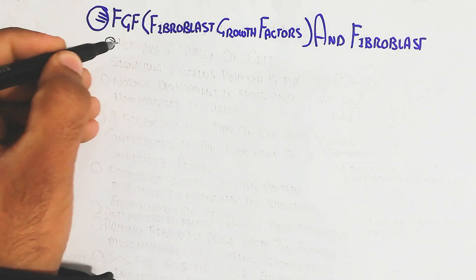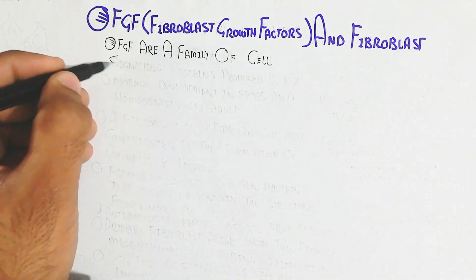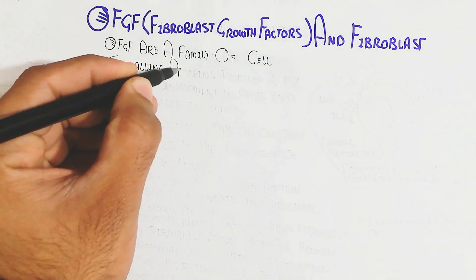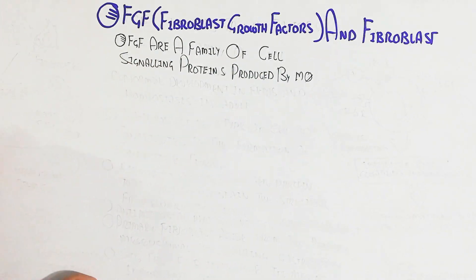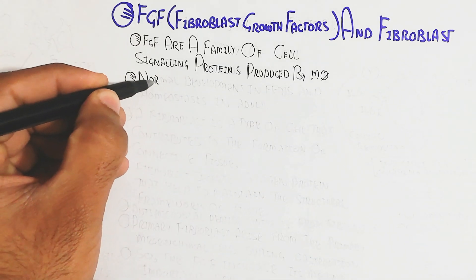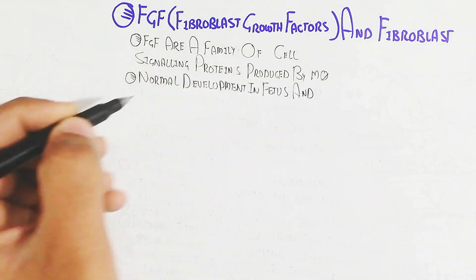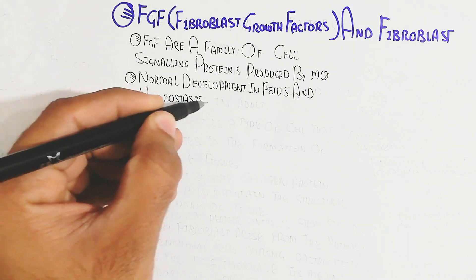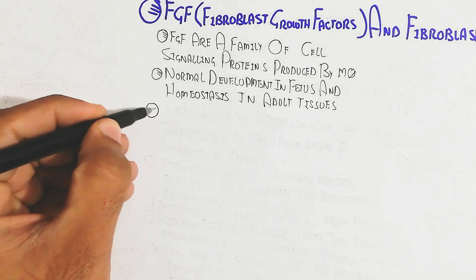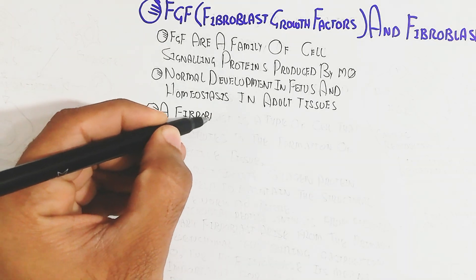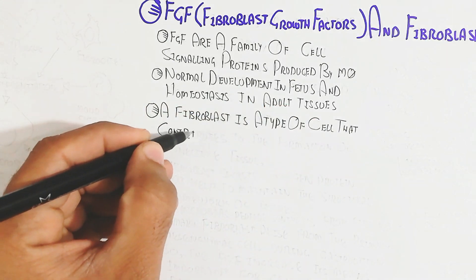The FGF are a family of cell signaling proteins produced by macrophages and different cell types. They are important normally in development in the fetus — including gastrulation, cleavage formation, and neurulation — and in homeostasis in adult tissue.